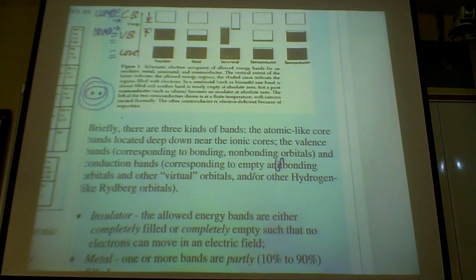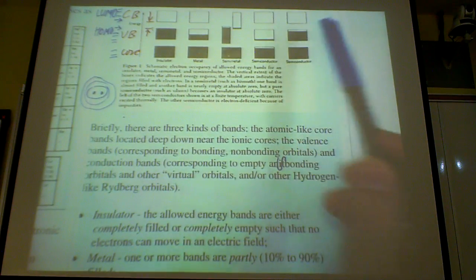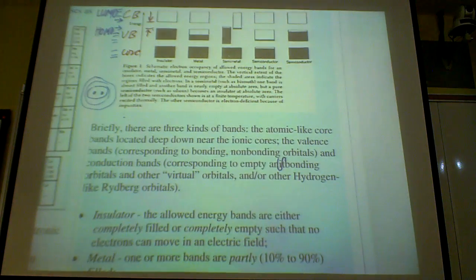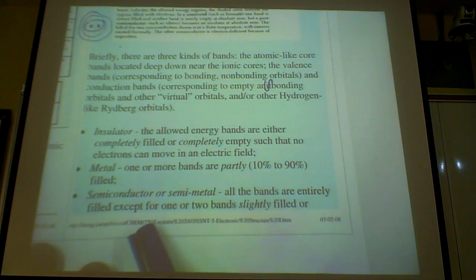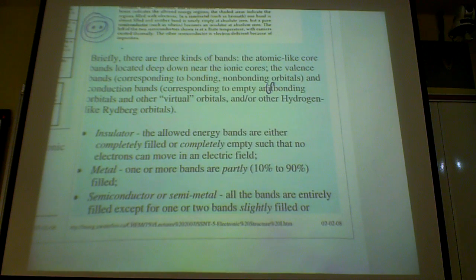What will happen when you have applied potential? They still have empty orbitals, so that means the electron can still move because you have empty state for it to transfer to. The bucket, you can just move it around like this. So, all the bands are either entirely filled, except for one or two bands, slightly filled or slightly empty. That's the semiconductor background.